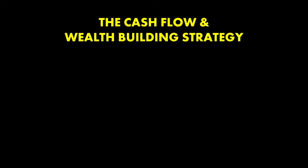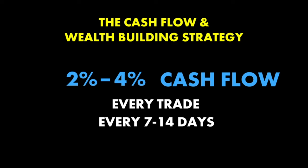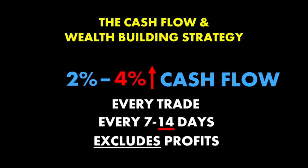I set up my trades to generate a targeted cashflow return of 2% to 4% just in cashflow on every trade, every seven to fourteen days. Many times I'll get more than that. I set most of my trades to expire in under 14 days. That 2% to 4% in cashflow does not take into account any profits I may make on the stocks involved in this strategy.